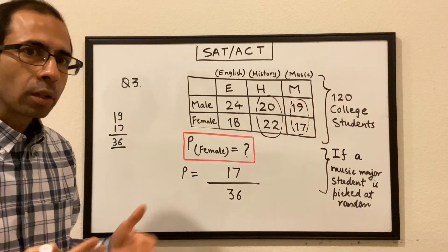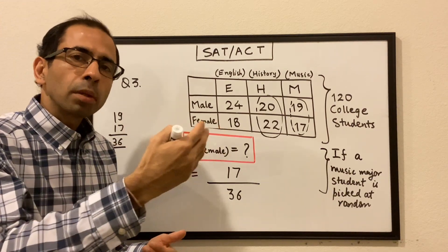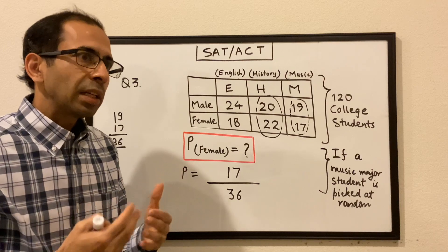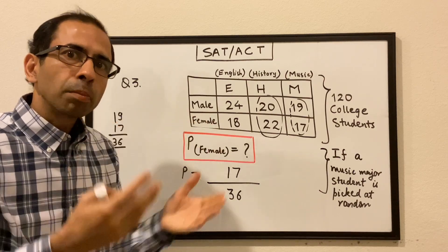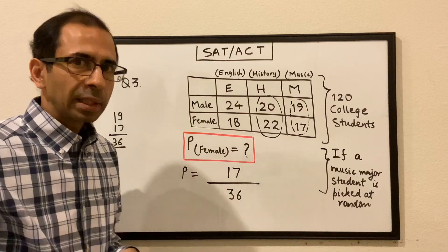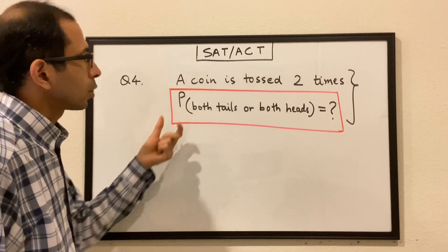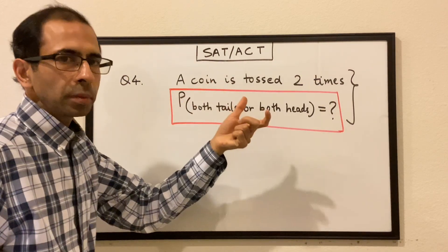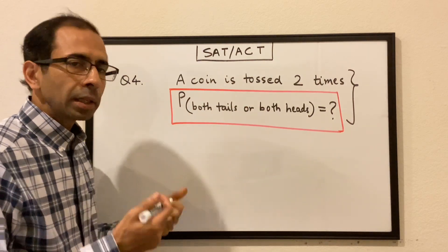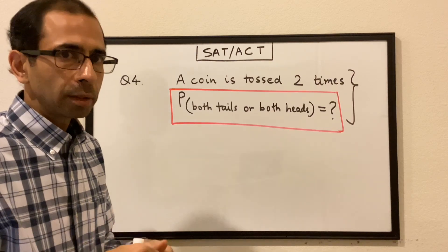Just to reiterate: the concept of probability is simple — it is number of favorable outcomes divided by the number of total outcomes, but we need to be very clear about what is our boundary, from which set are we trying to find the probability. That's the main thing. Question 4: a coin is tossed two times, and we have to find the probability that either we get both heads or we get both tails.